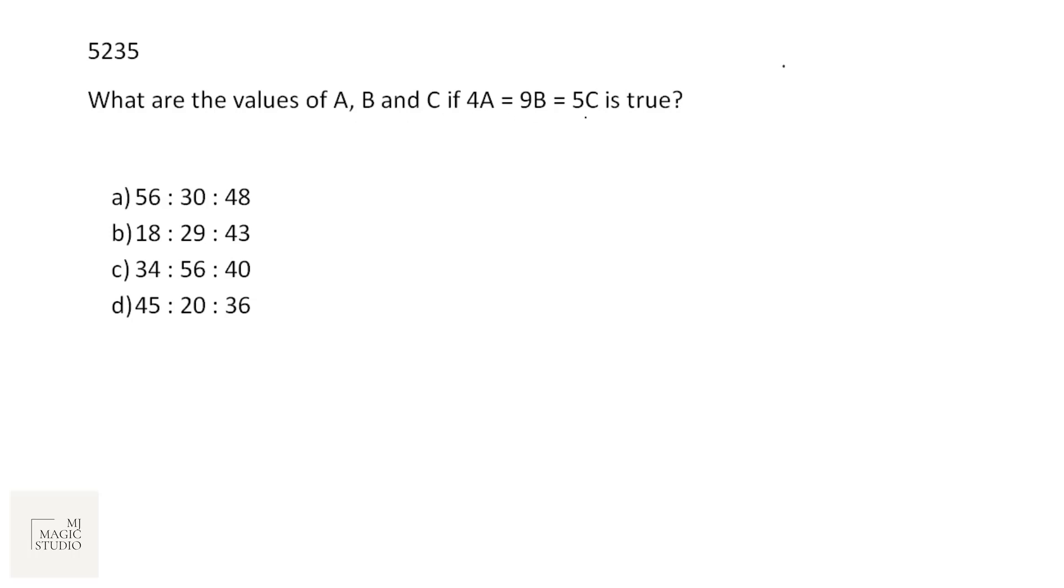The next one. What are the values of A, B and C if 4A = 9B = 5C is true? All the options are in ratios, so what we need to find is the ratio A:B:C. If 4A equals 9B, then A by B equals 9 by 4. Now 9B equals 5C, therefore B by C equals 5 by 9. We need A:B:C so we can use the joint ratio format. A:B is 9:4 and B:C is 5:9. Then A:B:C is 9 into 5 which is 45, 5 into 4 which is 20, and 4 into 9 is 36.